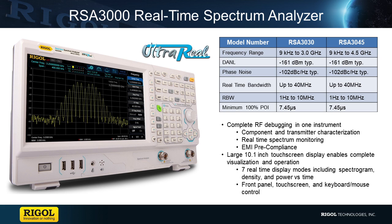The RSA 3000 gives engineers increased control, accuracy, and flexibility over their RF measurements throughout the design process, providing uncompromised performance at an unprecedented value. If you have any questions regarding this instrument or family of instruments, please contact us at Regal or visit regalna.com for more details.